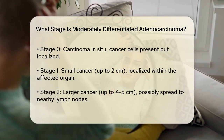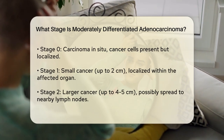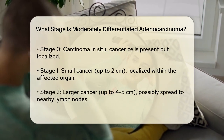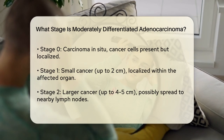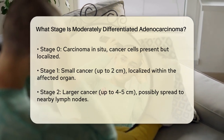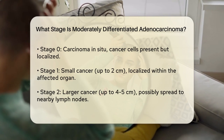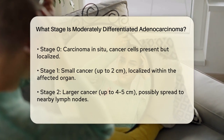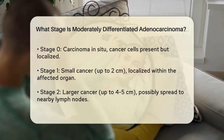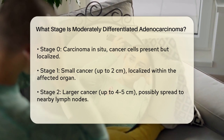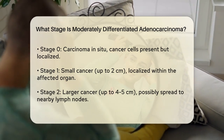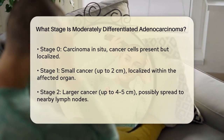Stage 0, also known as carcinoma in situ, is where cancer cells are present but have not spread beyond the epithelial tissue. Stage 1, the cancer is small — usually up to 2 centimeters in size — and is localized within the affected organ. Stage 2, the cancer is a bit larger, up to 4 to 5 centimeters, and may have spread to nearby lymph nodes, but not beyond the organ.